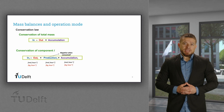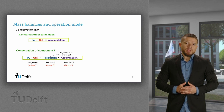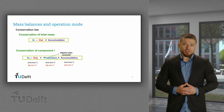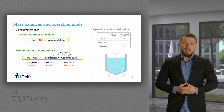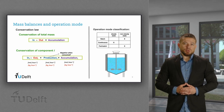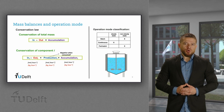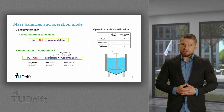These balances are valid in molar and mass units. As a recommendation, always double-check unit consistency — this mistake is more frequent than expected. The type of operation leads to systems that are either steady-state, which is the case of the chemostat, or non-steady-state for batch or fed-batch systems, and mass balances for each case are different.